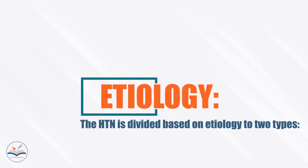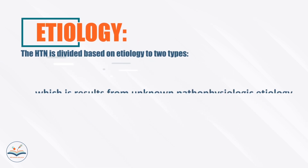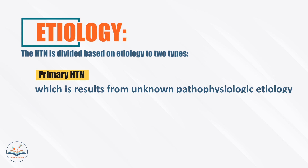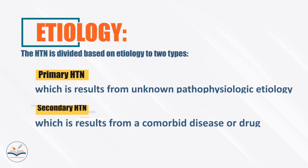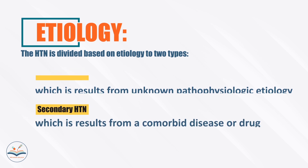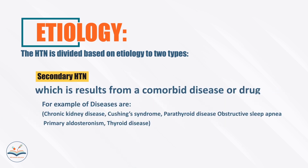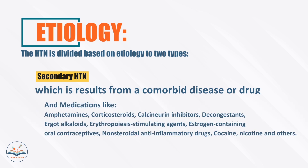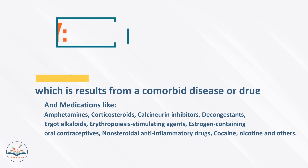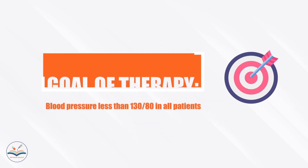Hypertension is divided based on etiology into two types: primary hypertension, which results from unknown pathophysiological etiology, and secondary hypertension, which results from a comorbid disease or drug. For example, diseases include chronic kidney disease, Cushing's syndrome, and parathyroid disease. Medications include NSAIDs, corticosteroids, and estrogen-containing oral contraceptives.